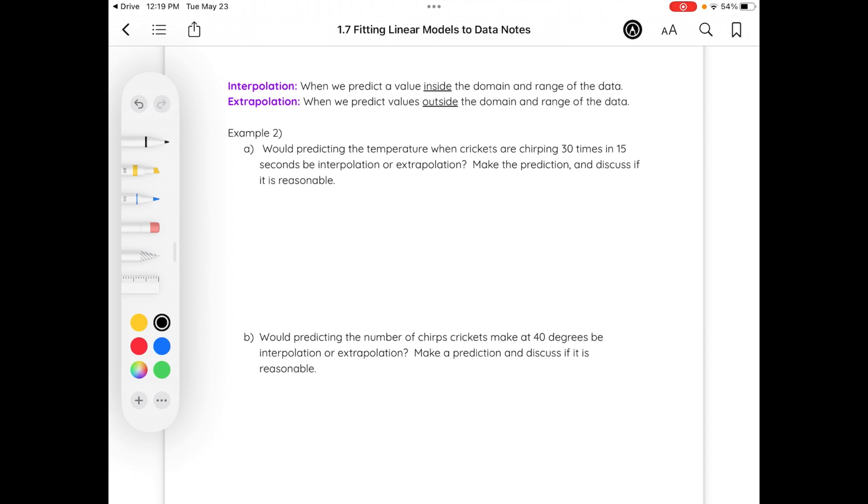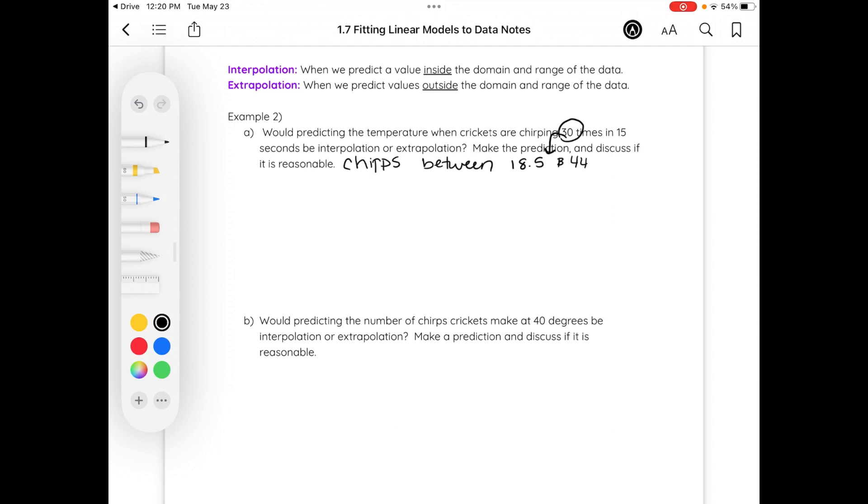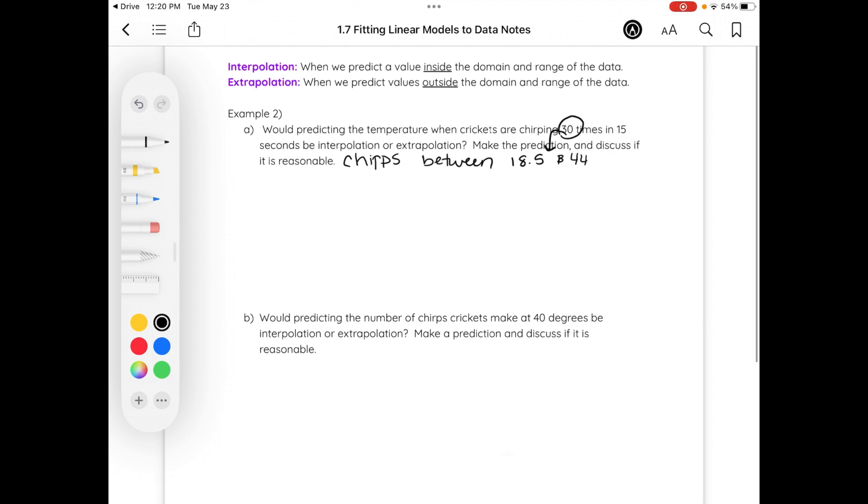Make the prediction and discuss if it is reasonable. Well, when we look at the table from the previous slide, the number of chirps that we have is between 18.5 and 44. 30 is in fact in between in the domain. So 30 chirps would be in the domain. So this is interpolation since 30 is in the domain.